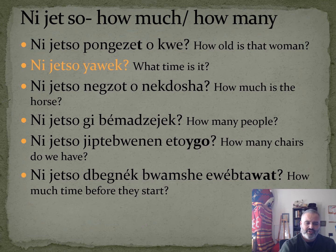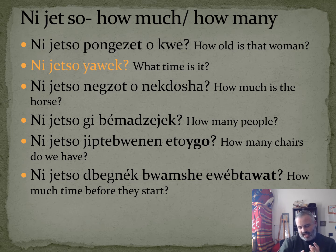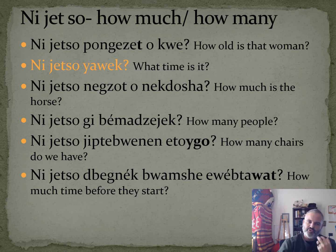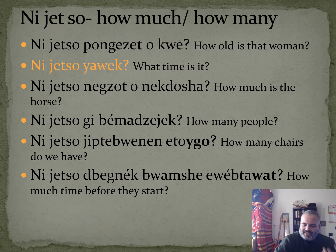For 'what time is it,' you can use ni jetsu dabuginak. There is no literal word for 'time' — ya wake just means 'it is a certain amount,' and dabuginak means 'it measures out to a certain amount.' So ni jetsu ya wake or ni jetsu dabuginak both mean 'what time is it?'